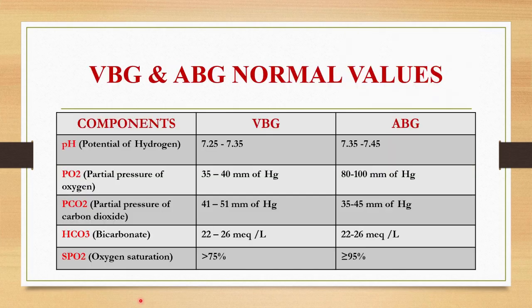Here are the normal values of VBG and ABG. In VBG the pH level ranges from 7.25 to 7.35. PO2 ranges from 35 to 40 millimeter of mercury. PCO2 ranges from 41 to 51 millimeter of mercury. Bicarbonate ranges from 22 to 26 milli-equivalent per liter and the saturation is more than 75 percent.